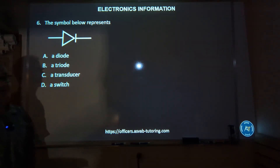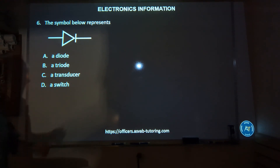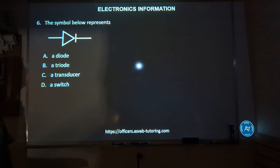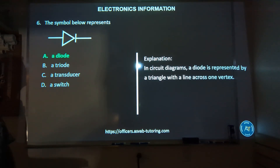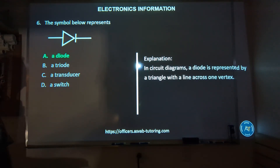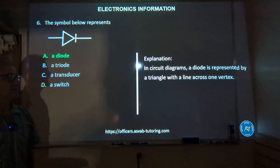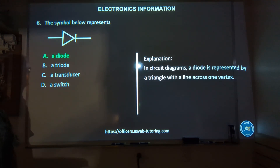Number six: the symbol shown represents — a diode, a triode, a transducer, or a switch? The correct answer is A, a diode. In circuit diagrams, the diode is represented by a triangle with a line across one vertex.